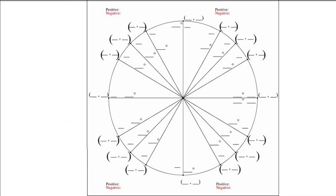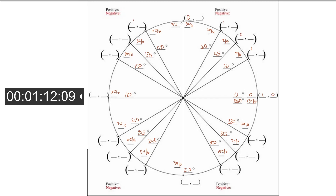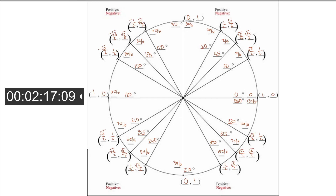Now I'm going to show you how knowing all of this and having the patterns memorized allows you to fill in this unit circle in under five minutes. As long as you can keep in mind the pattern for your coordinates, the pattern for your degrees, and the pattern for the positive and negative values, then you're able to really easily fill in the unit circle.